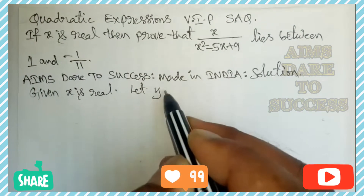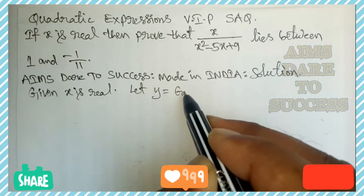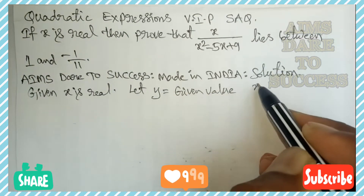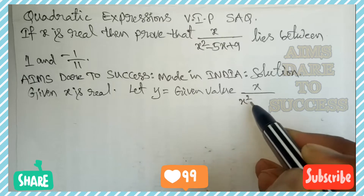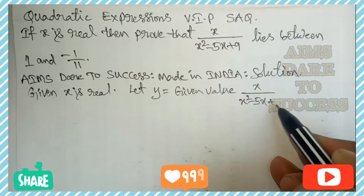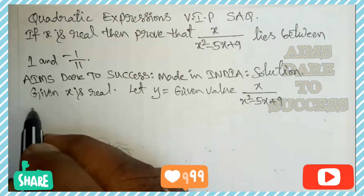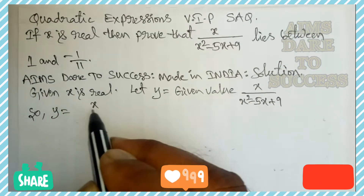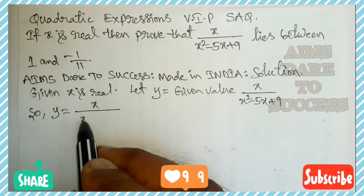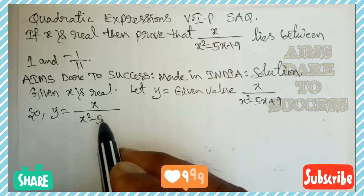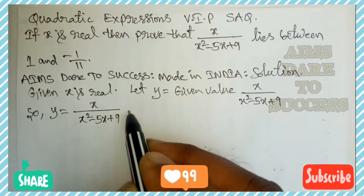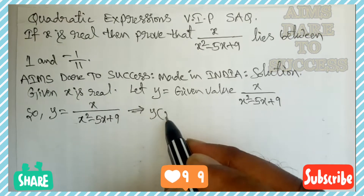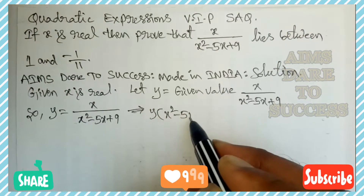Let y equal the given value: y = x / (x² − 5x + 9). So the given expression can be written as y, meaning y = x / (x² − 5x + 9).